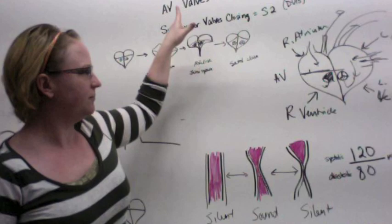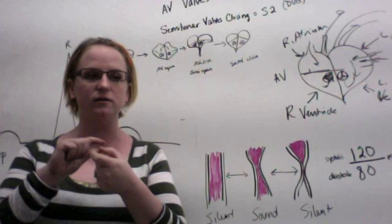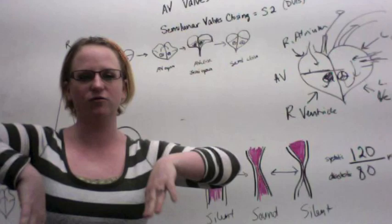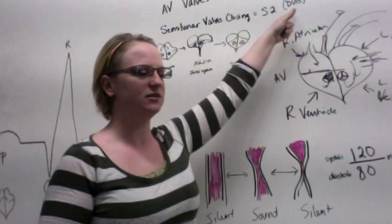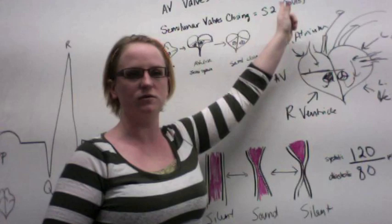When the ventricle relaxes again, the semilunar valve closes. A semilunar valve flap is a very hard piece of cartilage, so when it closes, it's not a soft flap like the AV valve — it makes a snap kind of sound: 'dub.' That's called an S2. So you have S1 and S2 corresponding to lub, which is your AV valve, and dub, which is your semilunar valve.